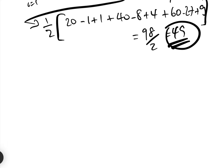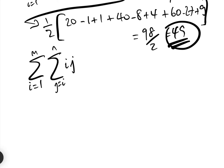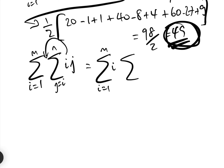Now let's put the big guns out. We are going to do the general case, which is the sum between i equals 1 and m, and j equals i and n, of i times j. This is the general formula we're looking for, and when we're done we can put in m equals 3 and n equals 4 to check we agree with 49. We take the i out — we've already agreed we can do that because the inner summation is summing over j only — so that becomes the sum between i equals 1 and m, times the sum between j equals i and n of j.